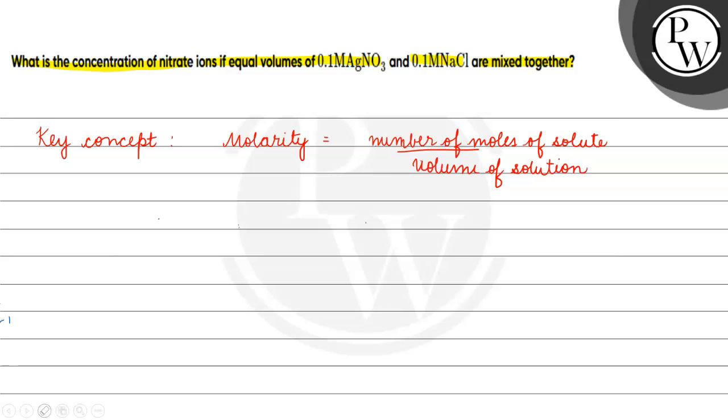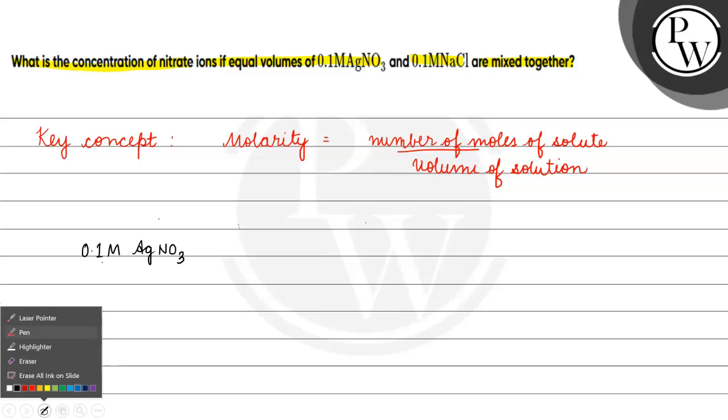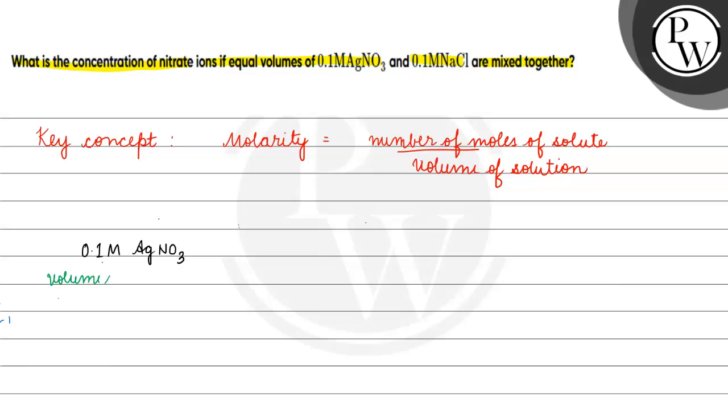In the question we have mentioned equal volumes of 0.1 molar AgNO3 and 0.1 molar NaCl. We have given 0.1 molar AgNO3. What does this mean? First of all, we assume the volume of solution is 1 liter.